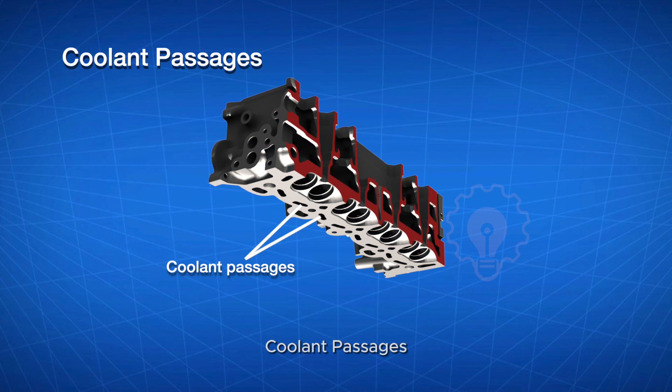Coolant passages: Channels within the cylinder head allow coolant circulation to regulate temperature. These passages connect to the engine's cooling system, ensuring efficient heat dissipation.